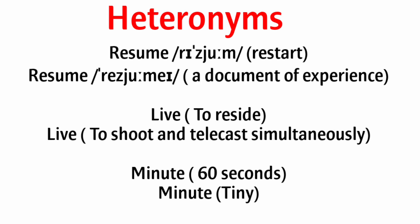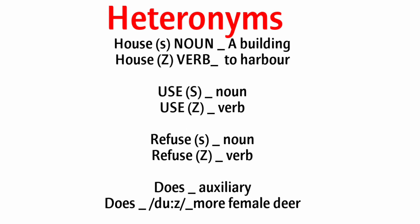More heteronym examples: live — to reside; live — to shoot and telecast simultaneously. Minute — 60 seconds; minute — tiny. House — a building; house — to harbor. Use — noun; use — verb. Refuse — noun; refuse — verb.